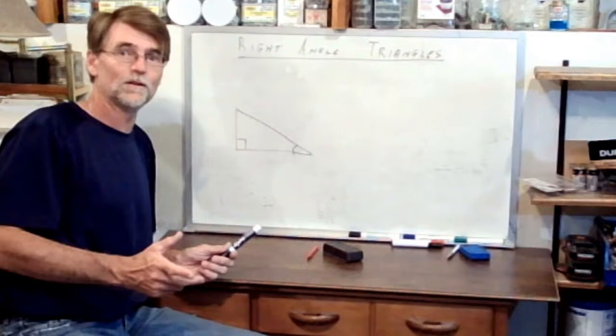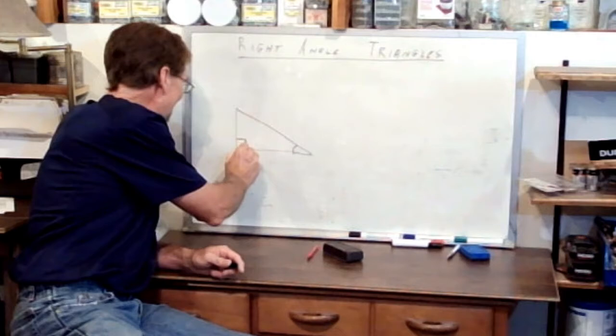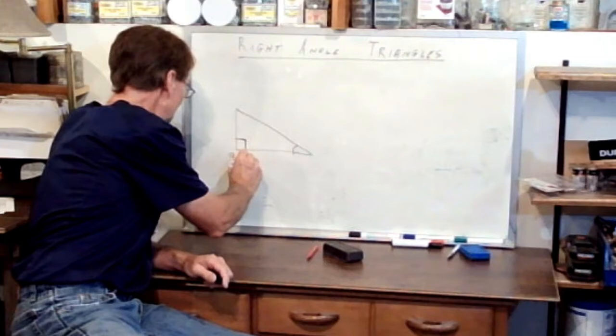Let's start right here — right angle triangle. What is a right angle triangle? Quite simply, a right angle triangle is any triangle which contains a right angle, meaning that angle is 90 degrees.